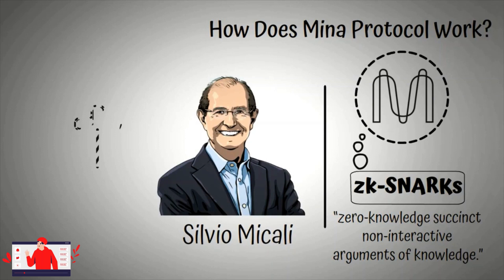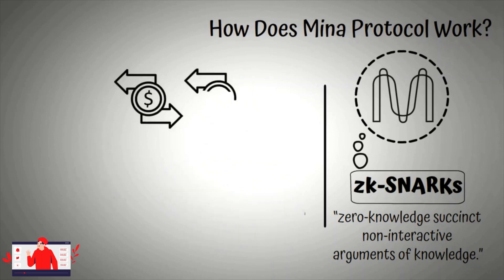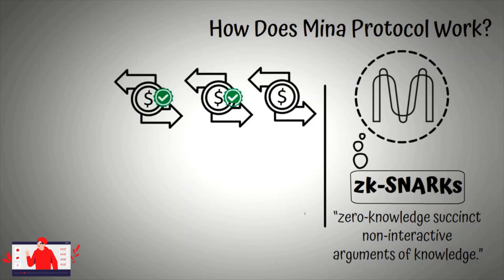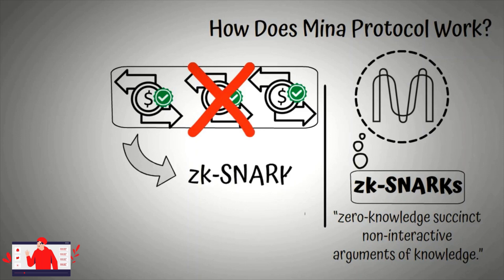Another popular cryptocurrency that uses ZK-SNARKs is Zcash. However, in MENA's case, this means that the network does not have to verify a transaction with every block that is created. Instead, the blockchain is represented with an easily verifiable cryptographic proof — the ZK-SNARK. This proof is much smaller than most other blockchains and represents the state of the whole chain, rather than the latest block.